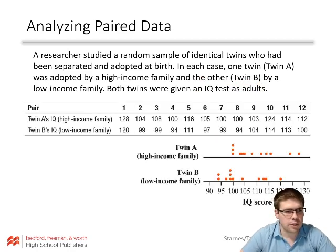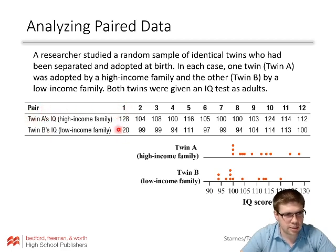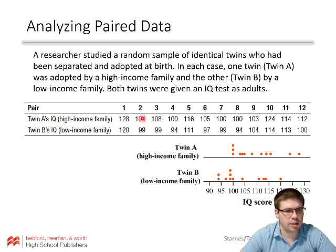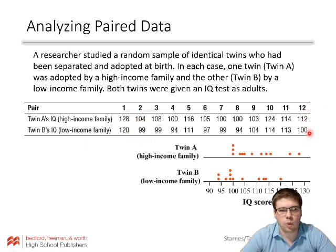Here is our data. We see we've got the pairs. Pair one: the twin in the high-income family had an IQ of 128, and the twin in the low-income family had their IQ listed as well. We go down the line — this is the second pair of twins, and so on. We have 12 pairs of twins.